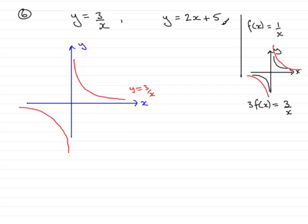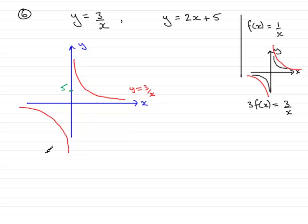For the second graph, y equals 2x plus 5 — you should recognize this is of the form y equals mx plus c. Any equation like that represents a straight line with a gradient of 2 and a y-intercept of 5, so this crosses the y-axis at 5. With a gradient of 2, for every 1 unit across you rise 2 units, so the line looks something like this coming through that point.